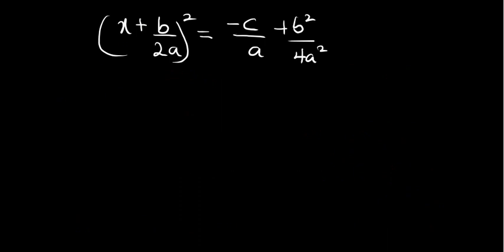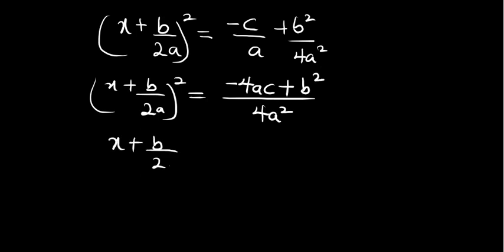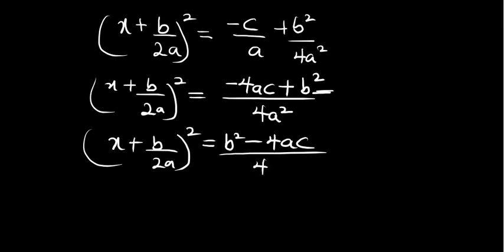We are going to find the LCM on the right-hand side. The LCM is 4a². Dividing 4a² by a gives 4a, so we have 4a times minus c, giving minus 4ac. Dividing 4a² by 4a² gives 1, times b² gives b². Rewriting with the positive term first, we get (x plus b over 2a)² equals (b² minus 4ac) over 4a².